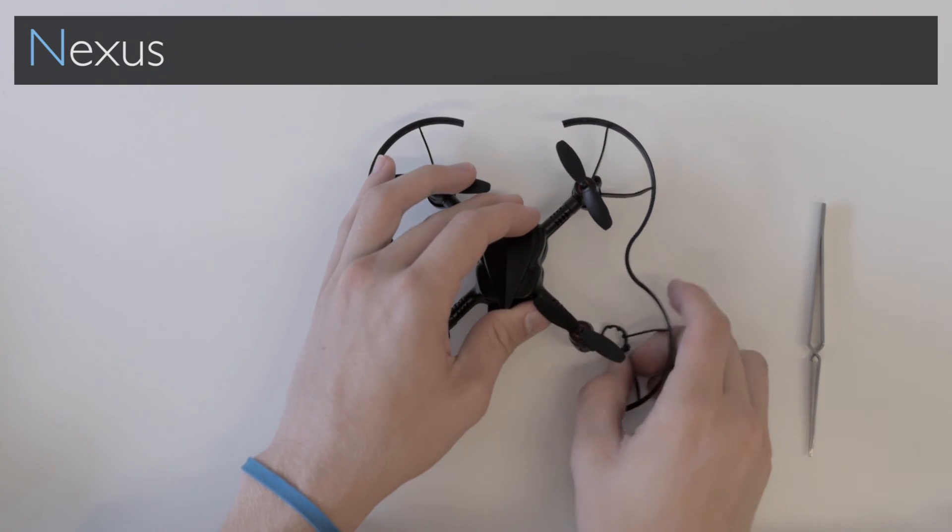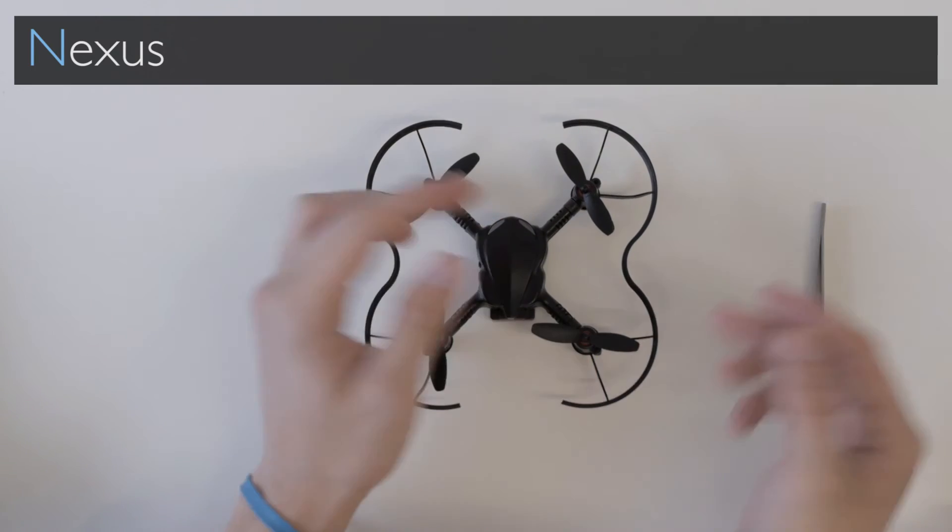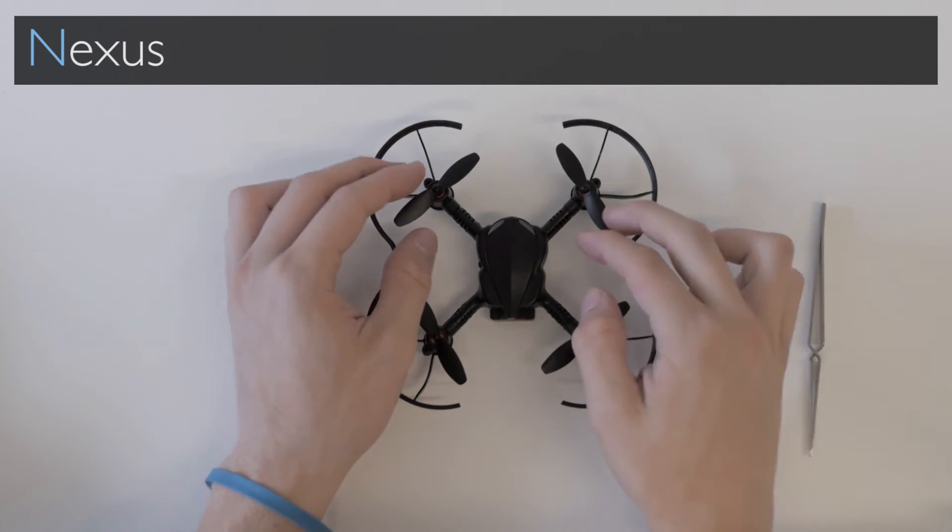That will hopefully make better contact with the plates on the drone. You can slide it back on and try flying it again. If that still doesn't work, you can try adjusting the leads again.